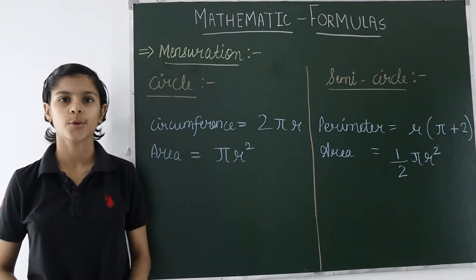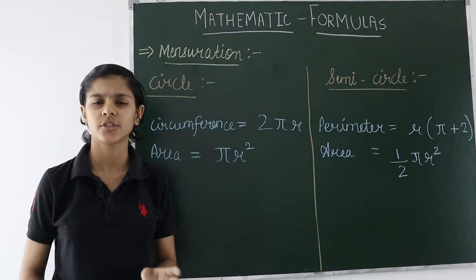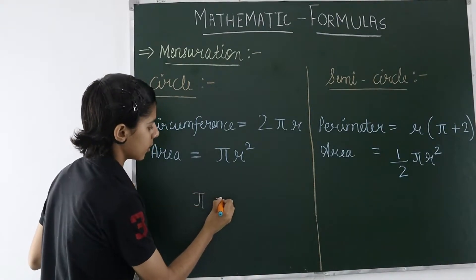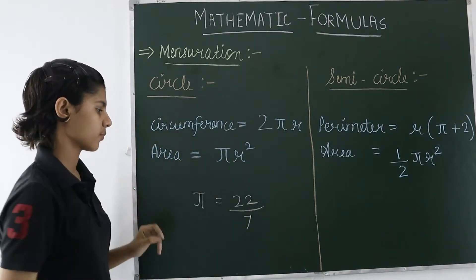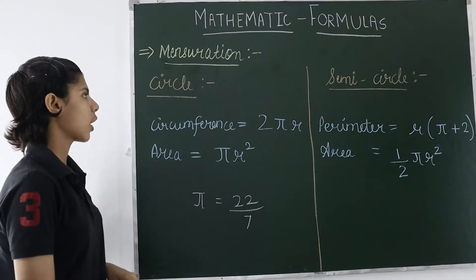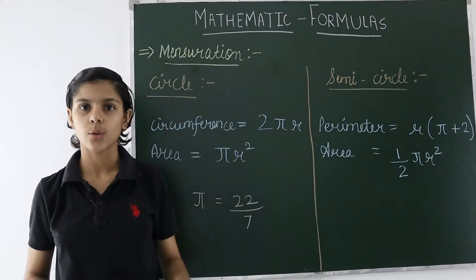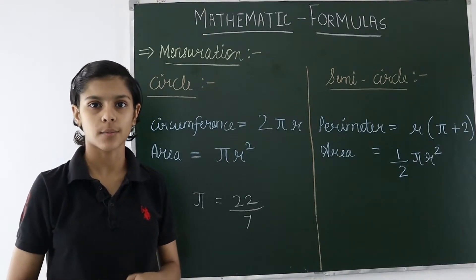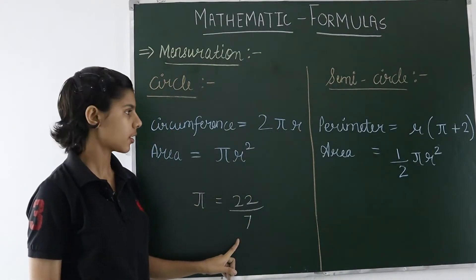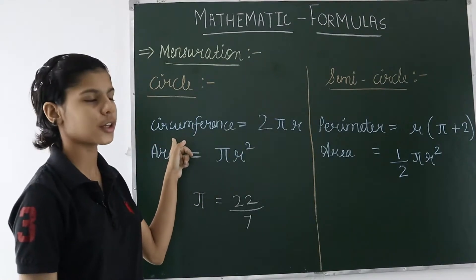Now we will talk about circle and semicircle. Before discussing circumference and area, we should know what pi is. Pi, represented by this symbol, is the fraction 22/7, and it is used very widely in the concepts of circle and semicircle. The circumference of a circle — circumference is the perimeter; since a circle is round in shape, it is called circumference. The formula is 2πr, which is 2 into 22/7 into r, where r is the radius.